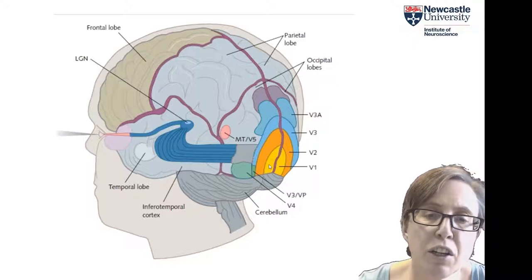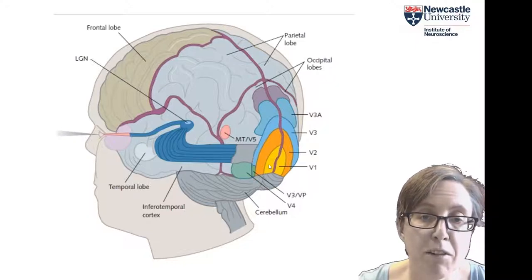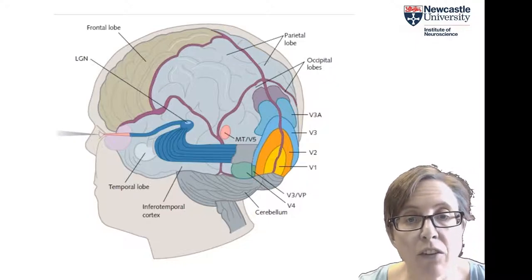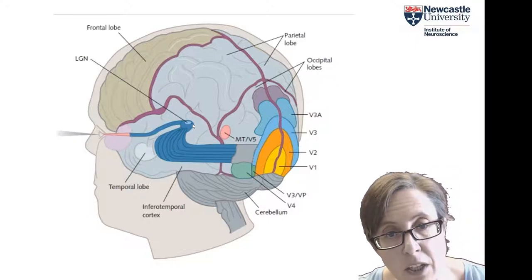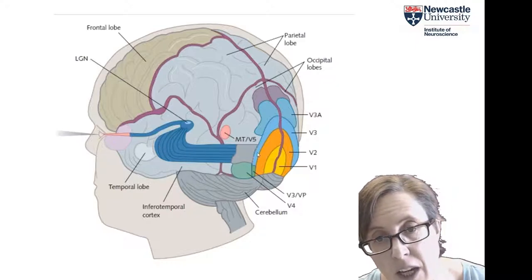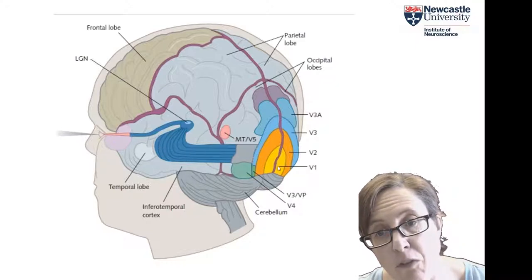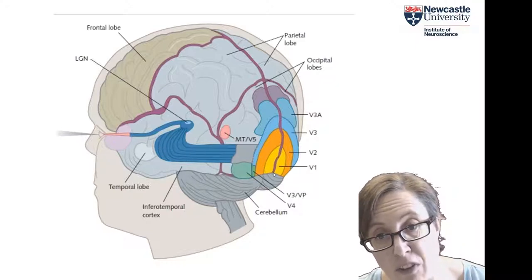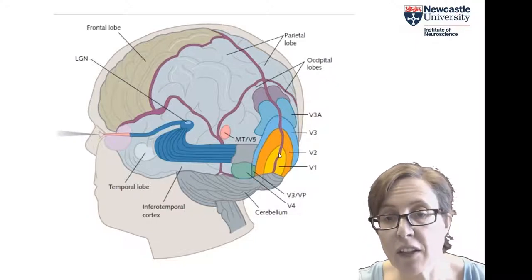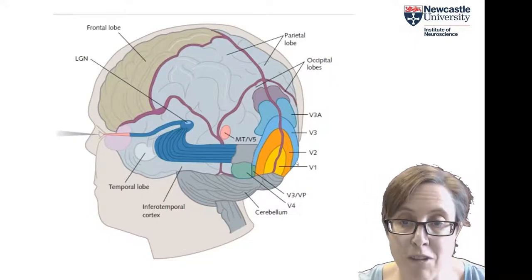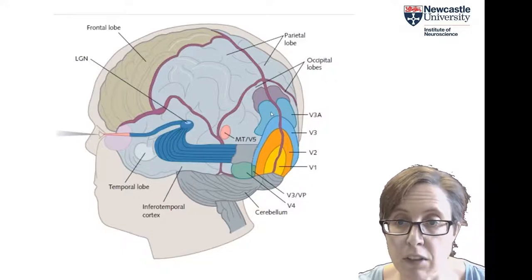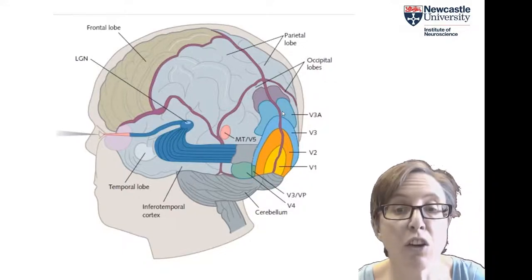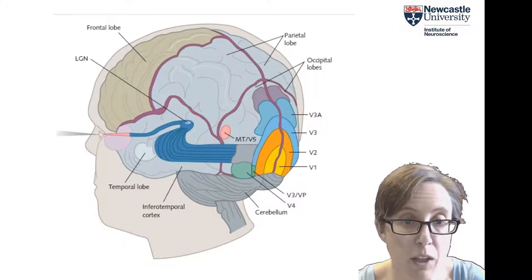This diagram shows that there are many other visual areas beyond V1. We've seen the optic nerve from the eyes going to the LGN, then the optic radiation going first to primary visual cortex V1, but there are many other brain areas — V2, V3, V3a, and so on. There are lots and lots of visual areas in the brain.